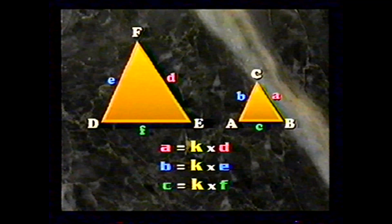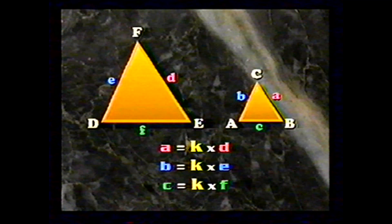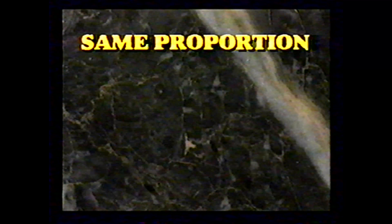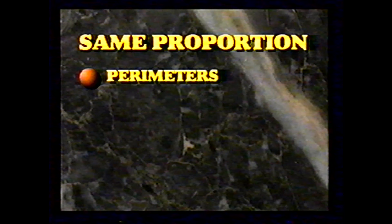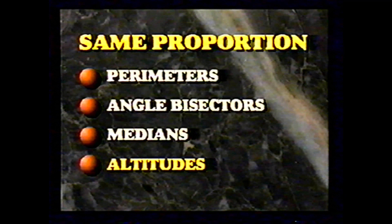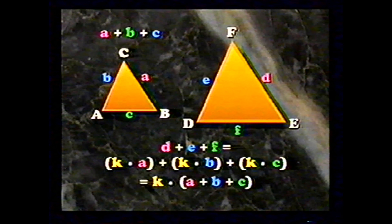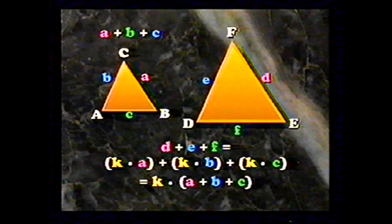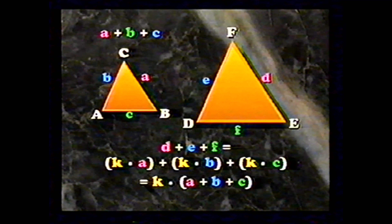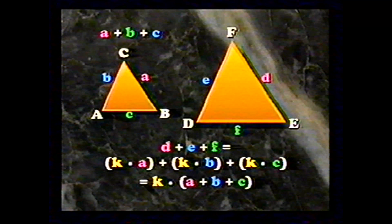Finally, there are a few more ratios that hold true for similar triangles. If two triangles are similar, there is a number K such that the length of each side of the first triangle equals K times the length of the corresponding side of the second. The perimeter of a triangle is the sum of the lengths of the three sides. Adding the sides of the second triangle gives D plus E plus F, which equals K times A plus K times B plus K times C, equaling K times A plus B plus C. The perimeter of the second triangle is therefore K times the perimeter of the first.